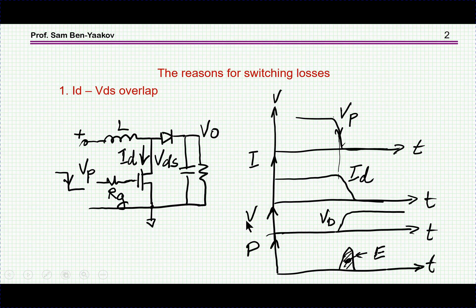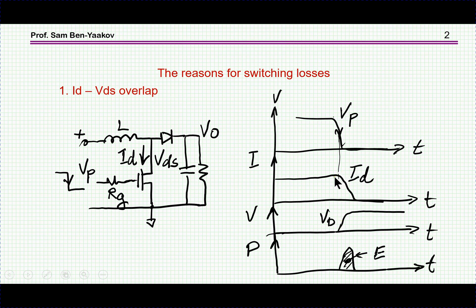There are two parts to the switching losses, and I'm talking about hard switching. One is the turn-on and one is the turn-off. If we look at the turn-off, that means the current is flowing through the inductor into the transistor and I'm turning it off. The input pulse is going down, the drain current of the transistor will go down, and the drain voltage will go up. There will be an overlap between the going-down of the current and the rising of the voltage, and this overlap means power loss. The area of the product is the energy loss per switching instant — in this particular case, per turn-off.